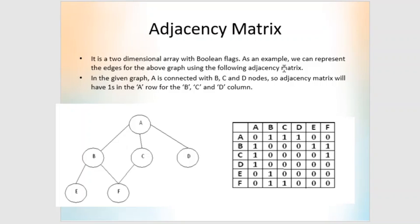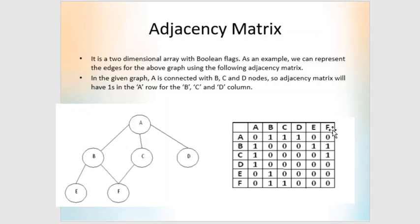For the adjacency matrix, first check the number of nodes in the graph. Here we have A, B, C, D, E, F — six nodes. So we create a matrix with six rows and six columns, with row and column labels A, B, C, D, E, F.